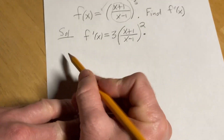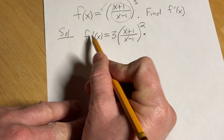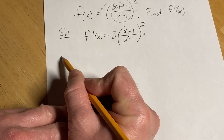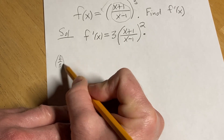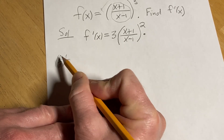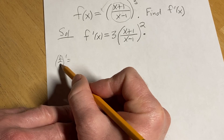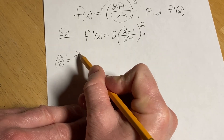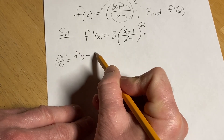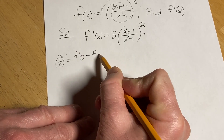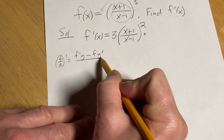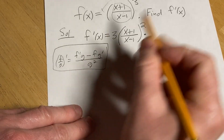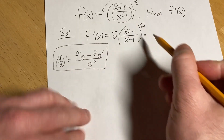The quotient rule says if you have two functions — f over g, think of f as your first and g as your second or bottom — it's the derivative of the top times the bottom, minus the top times the derivative of the bottom, over the bottom squared. This is the formula we're going to apply here.